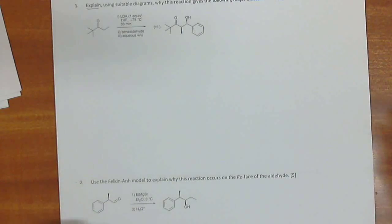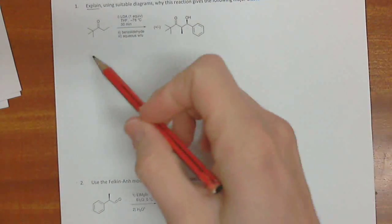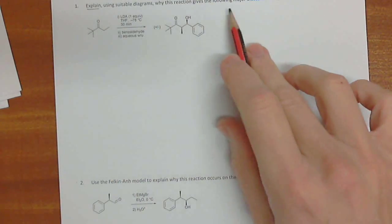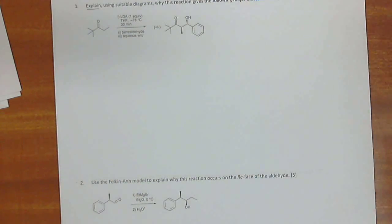So it can't just be structures, you need to draw some things out. Okay, so we're going to be using the Zimmerman-Traxler to work this out. Let's explain, using suitable diagrams, why this reaction gives the following major diastereomer.